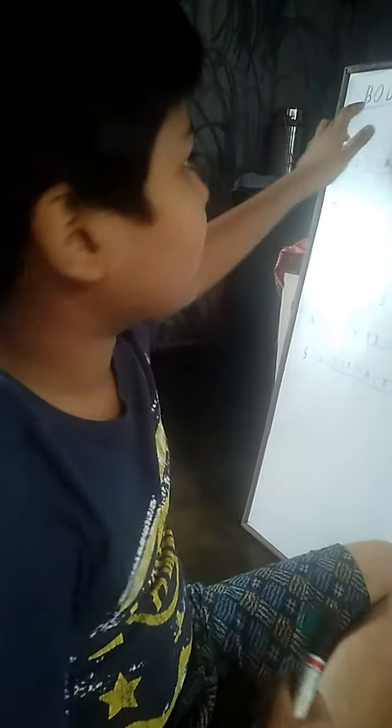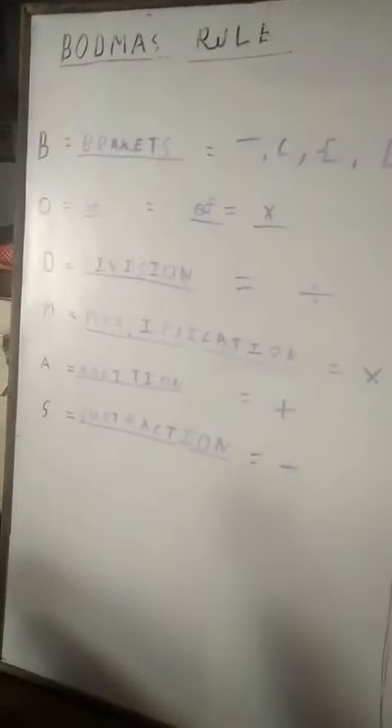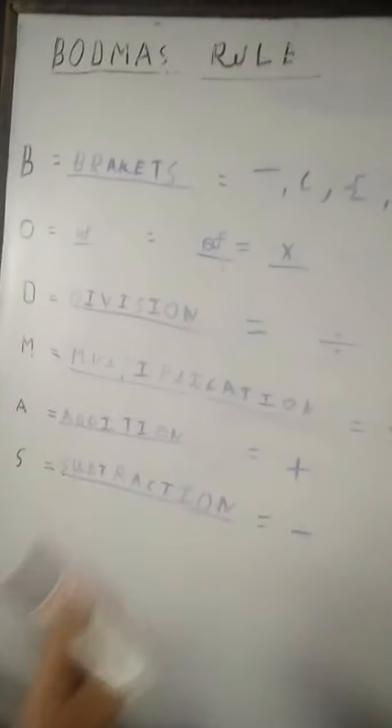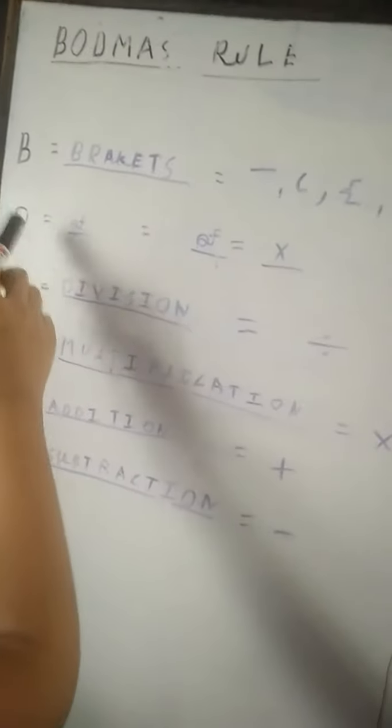I am a math trainer. Today I am discussing the topic of Board Master Rule. Board Master Rule is also known as Simplification. Today I am going to study how to use the Board Master Rule, and I have a spelling — the spelling of B.